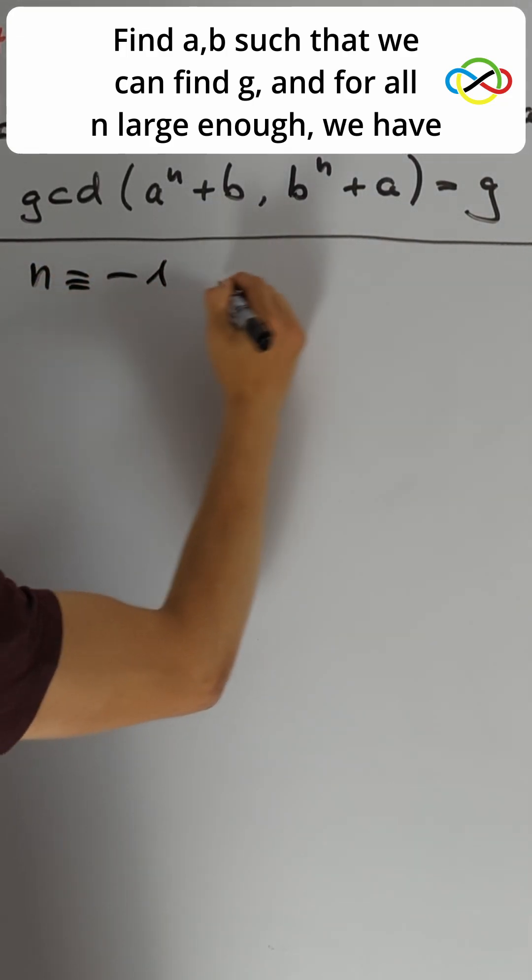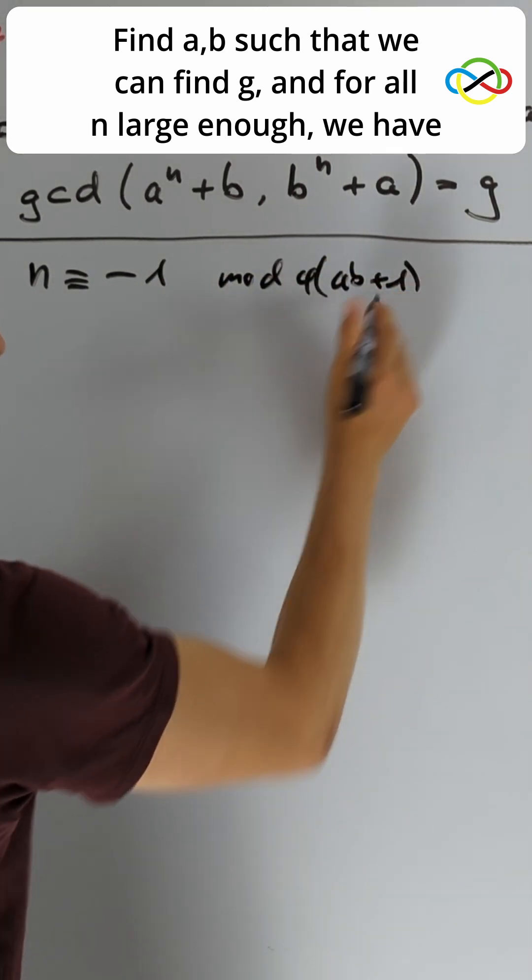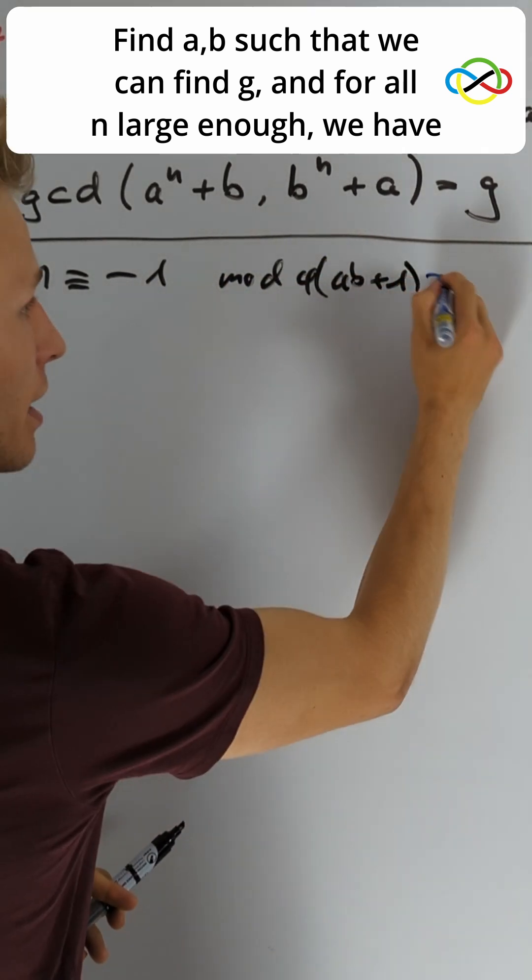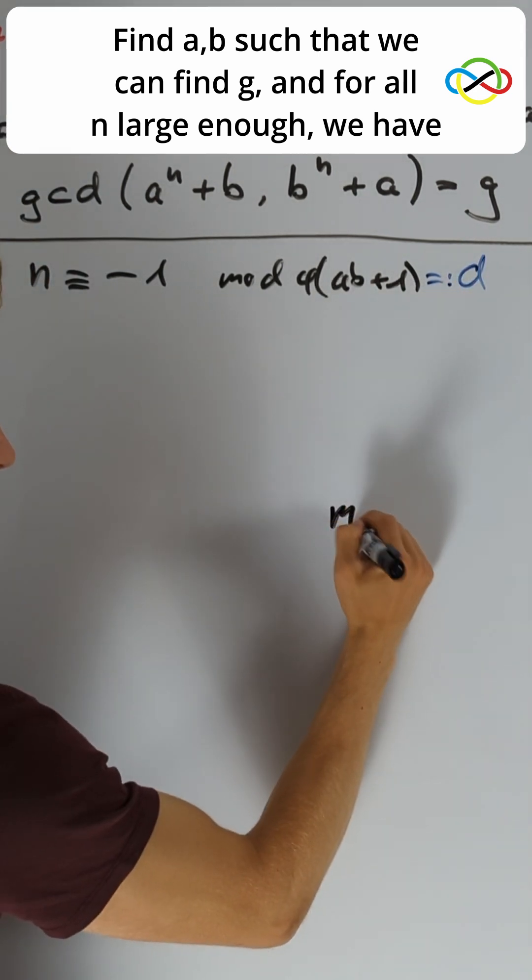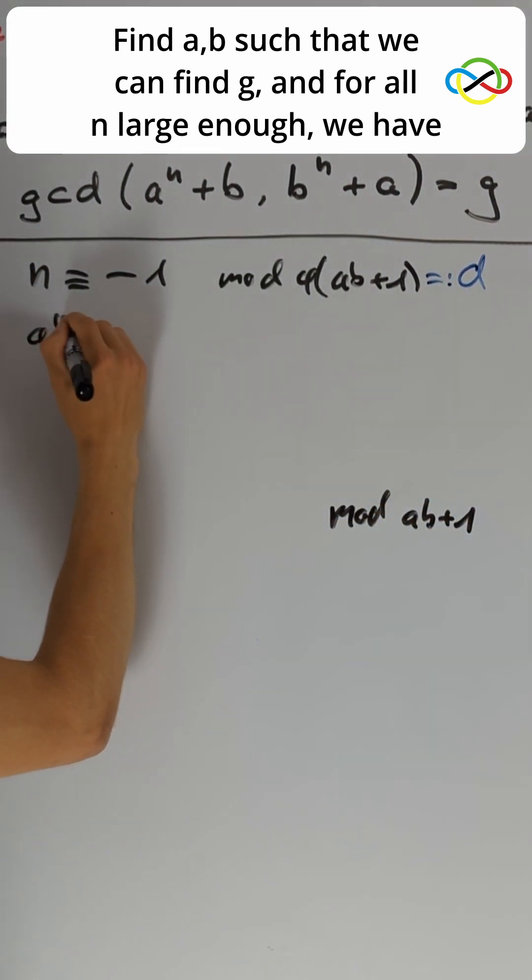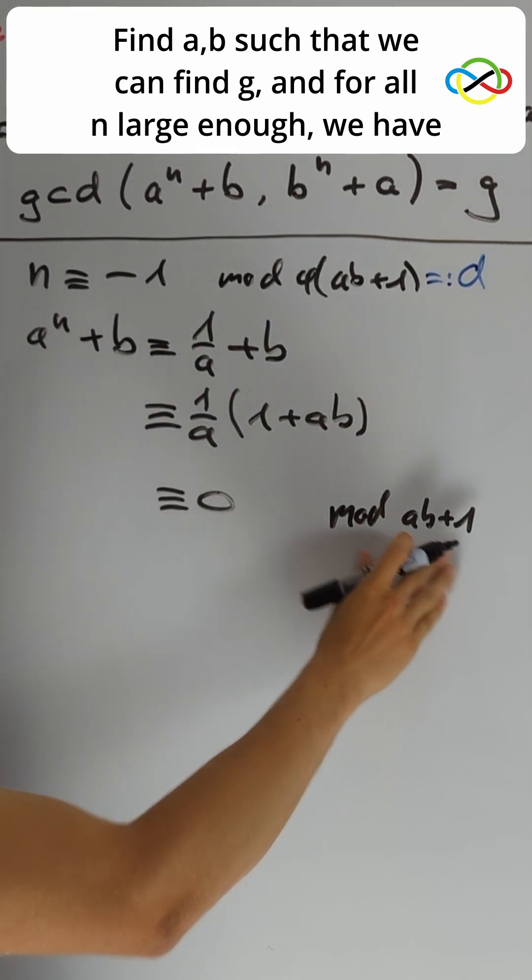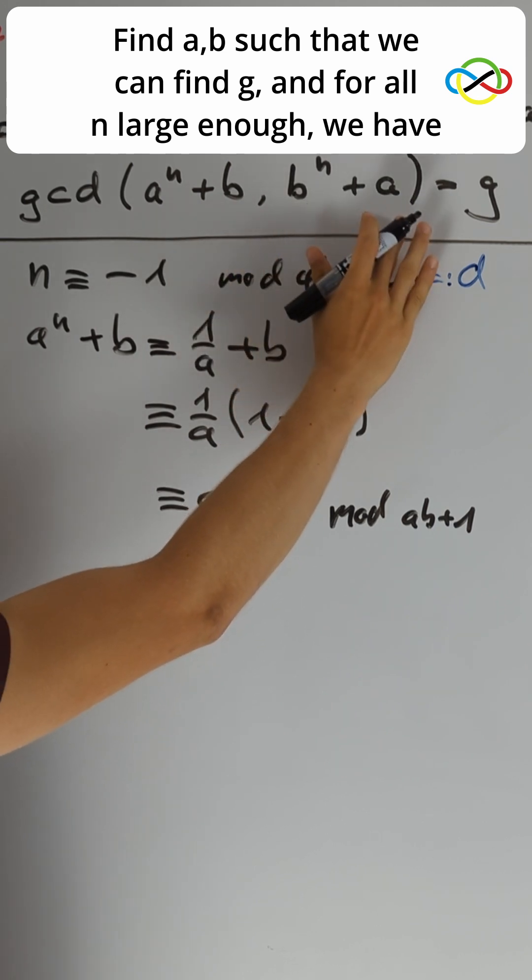Take n congruent to -1 modulo φ(ab+1), which I'm gonna denote by d. Modulo ab+1, we get that a^n + b is congruent to 0. By symmetry, ab+1 also divides b^n + a.